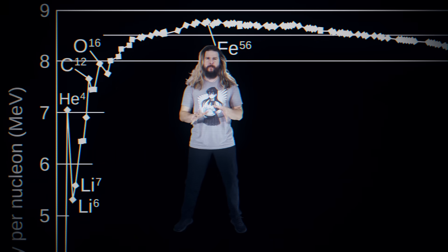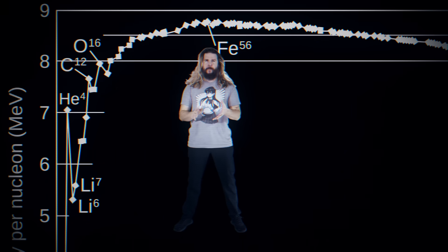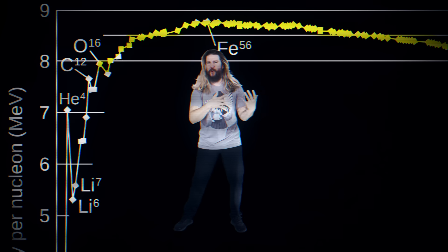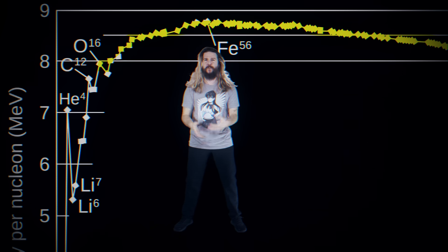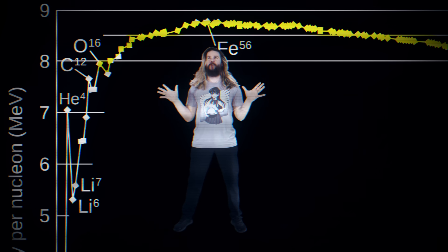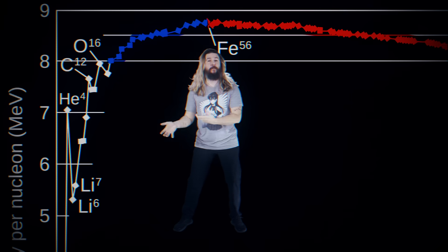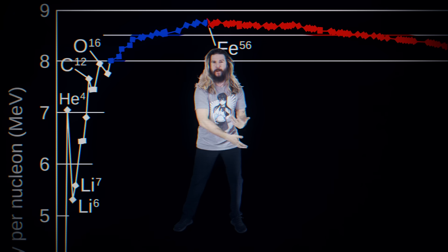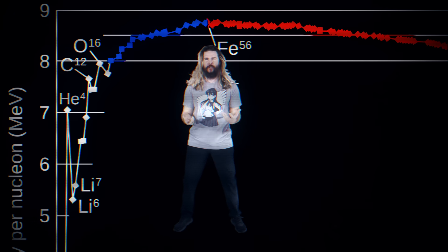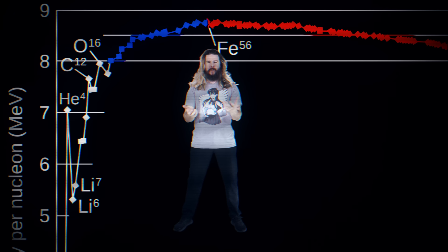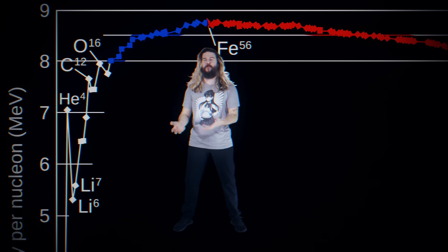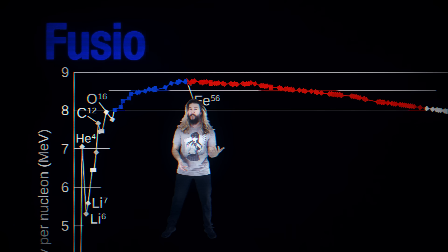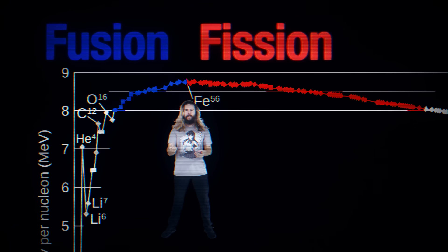Finally, we get to the true importance of this graph. Because there are differences along this line in nuclear stability, there are two areas where two atoms can come together to be a more stable atom, and one atom can split apart to become two more stable atoms, releasing energy in each case. These two areas denote the energetically advantageous processes of nuclear fusion and fission, respectively.